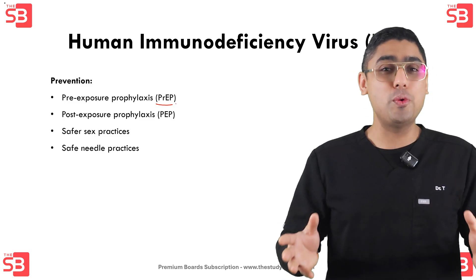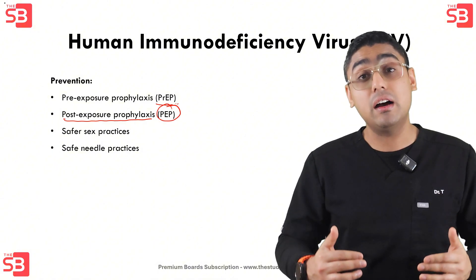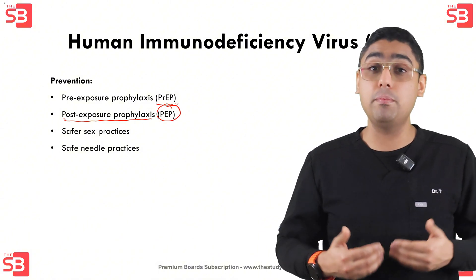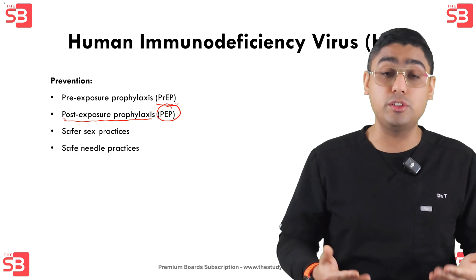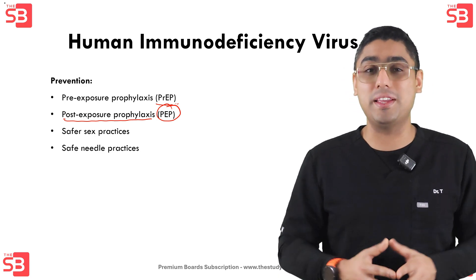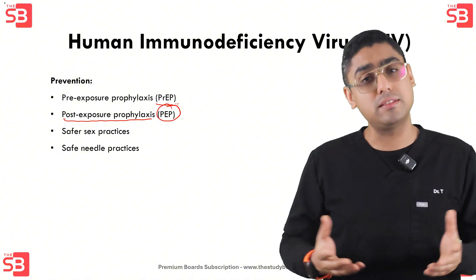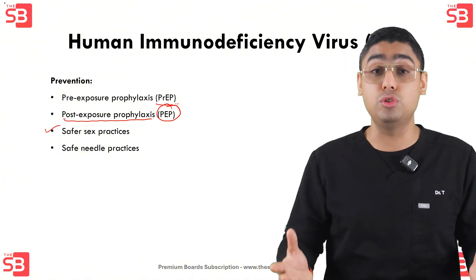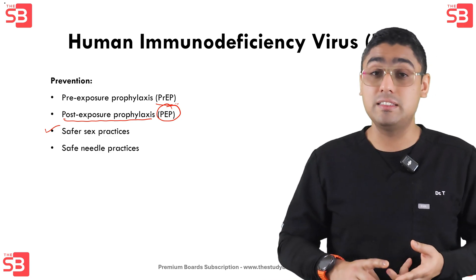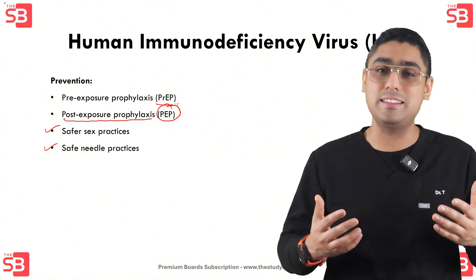Another approach is post-exposure prophylaxis, which is taken immediately after potential exposure — like any accidental needle stick or unprotected contact — to reduce the risk of the virus establishing itself in the body. In addition to these medical interventions, safer practices play a huge role in prevention. Practicing safer sex and safe needle practices are essential for protecting against HIV.